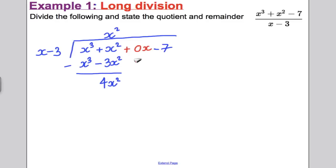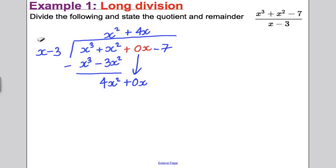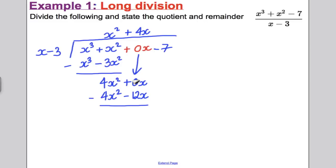Now we bring down the 0x. What do I need here to multiply by x − 3 to give me 4x²? I always deal with the leading term. I need 4x, so I add 4x. This 4x multiplied by everything gives me 4x² and 4x × (−3) = −12x. Put a line under it and subtract the two expressions. 4x² take away 4x² is nothing. 0 subtract −12x is 12x.